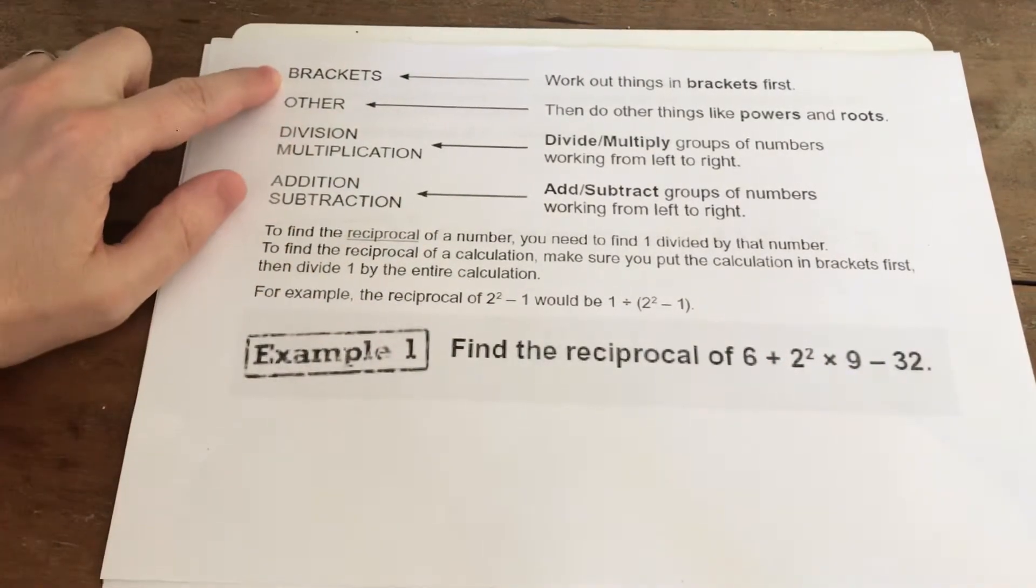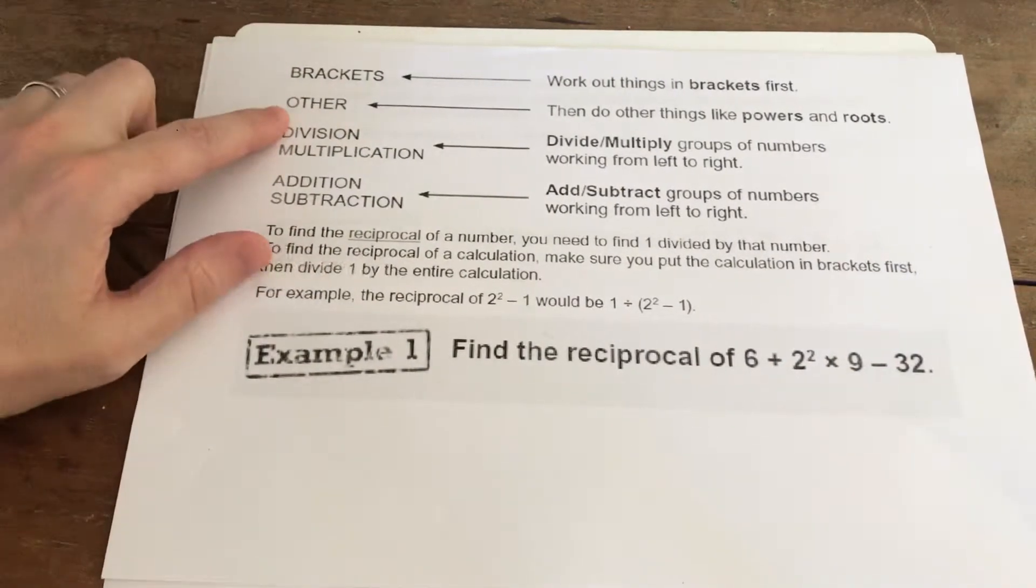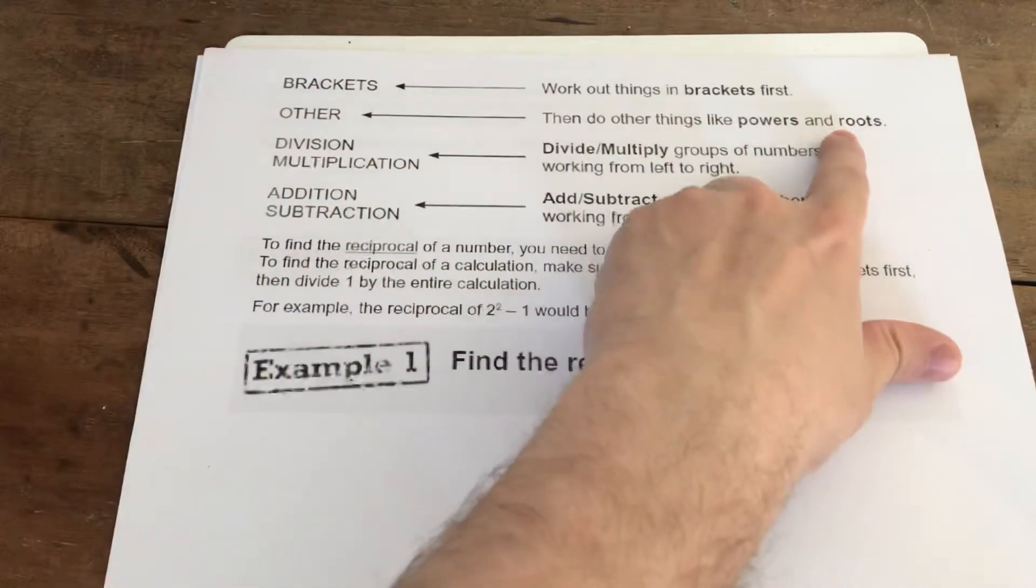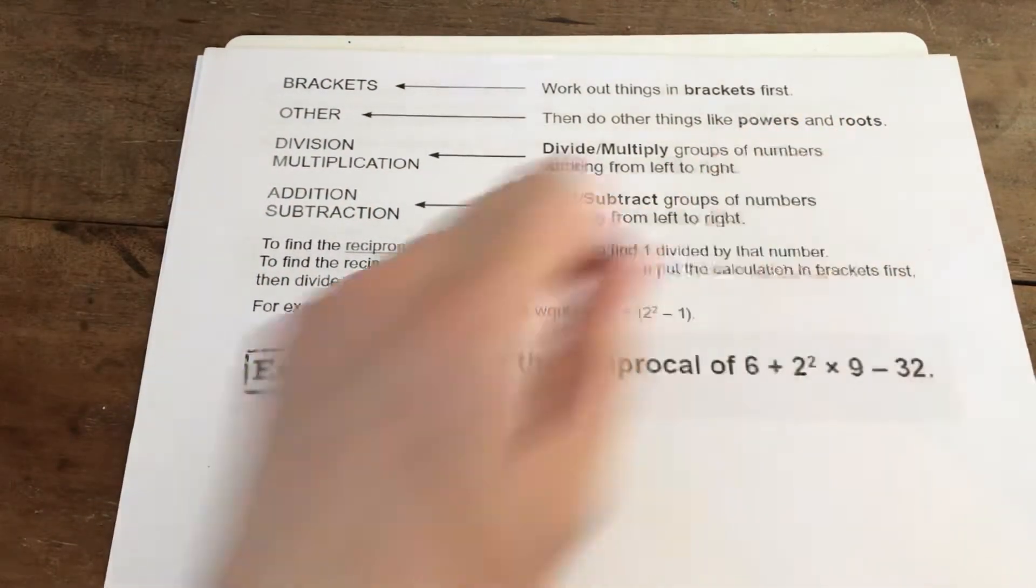So we start off by doing the brackets first. Your O is either sometimes referred to as other or indices if it's BIDMAS you're looking at. This talks about you completing the powers and the roots next.